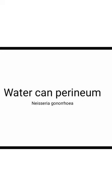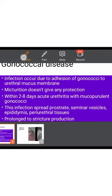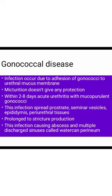This video covers the topic of Watering Can Perineum, commonly asked in short notes. It is a gonococcal infection where the gonococcal bacteria adhere via pili onto the urethral mucous membrane. The attachment is so strong that even micturition through urine cannot remove them. The incubation period is two to eight days.